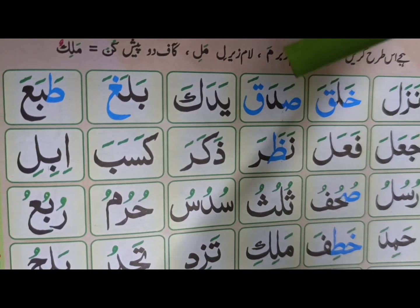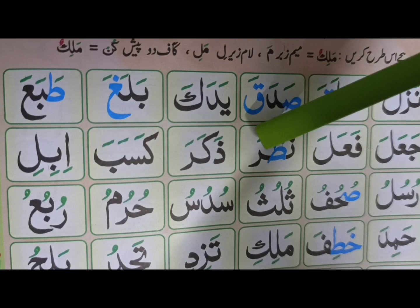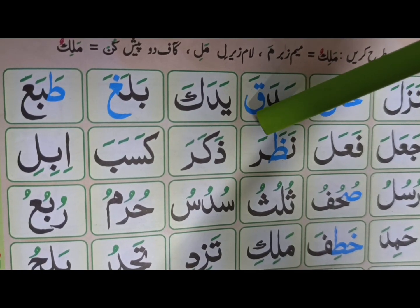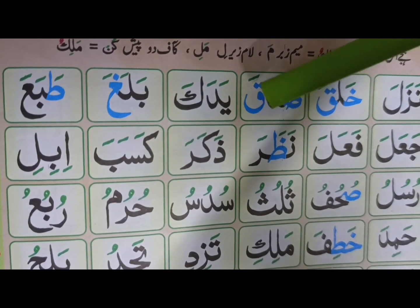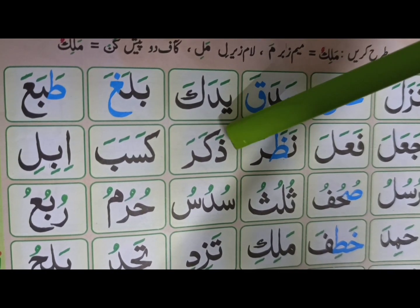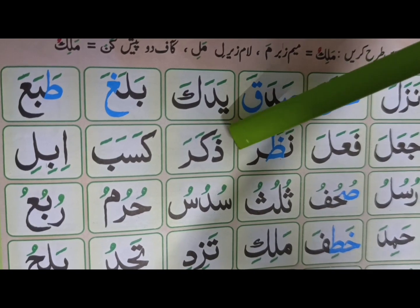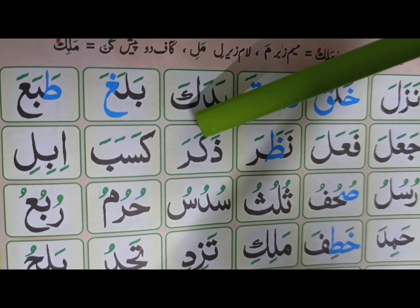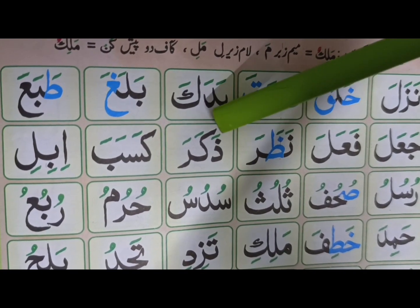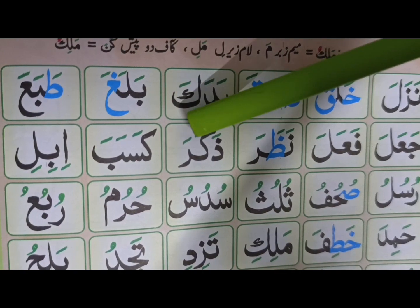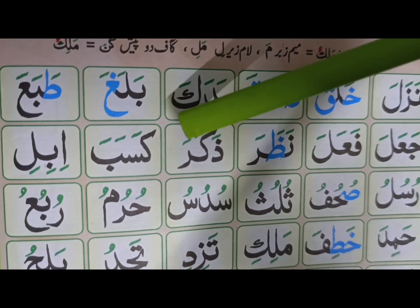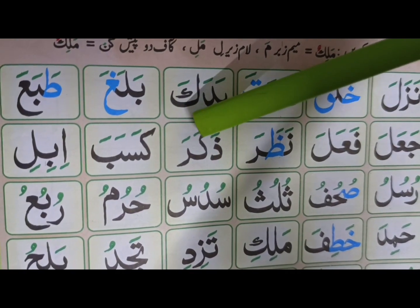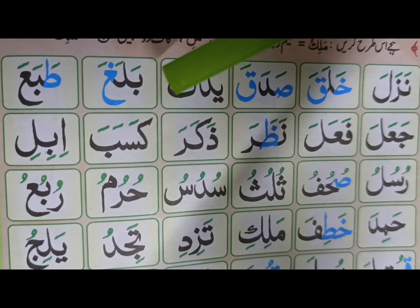رو کے اوپر فتحہ ہے، زبر ہے، تو رو کو ہمیشہ پور، یعنی موٹا کر کے پڑھیں گے۔ ذال، فتح — ذا۔ کاف، فتح — کا۔ ذا-رو۔ (Since ro has a fatha/zabar above it, ro is always read thick/heavy. Dhal, fatha — dha. Kaf, fatha — ka. Dha-ro.)